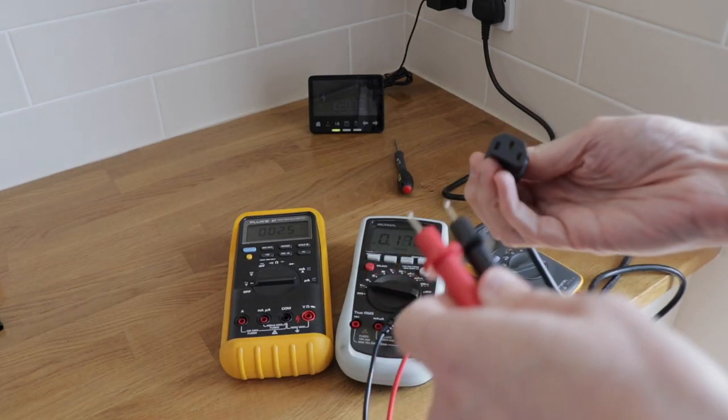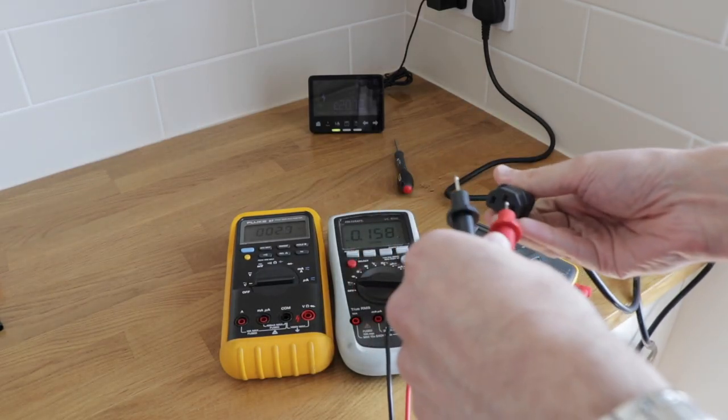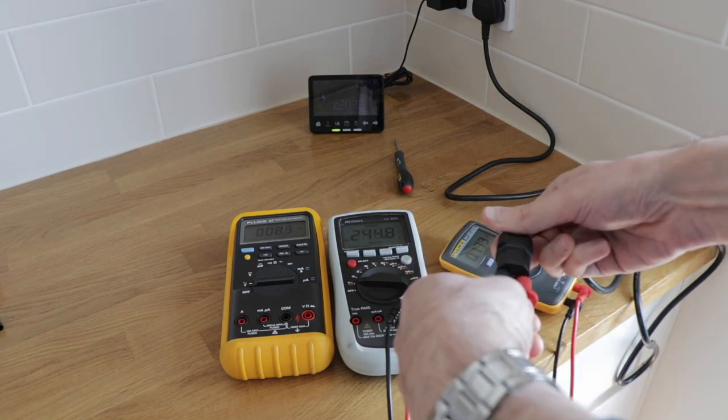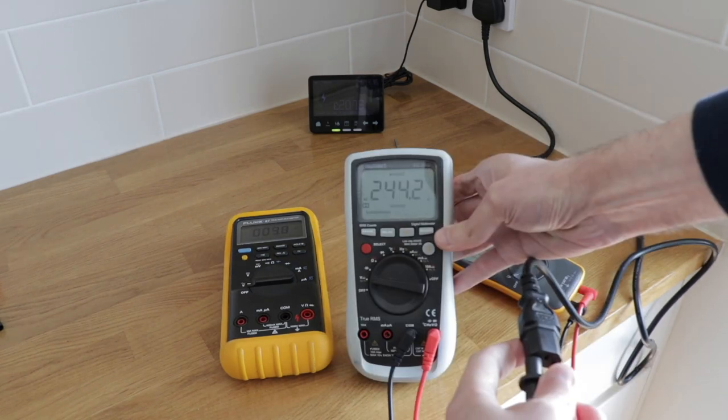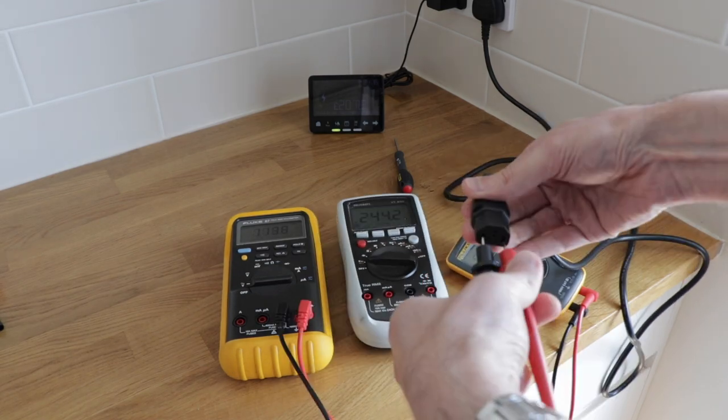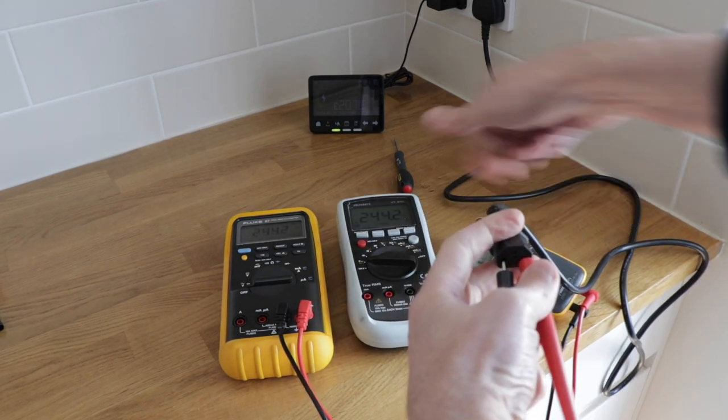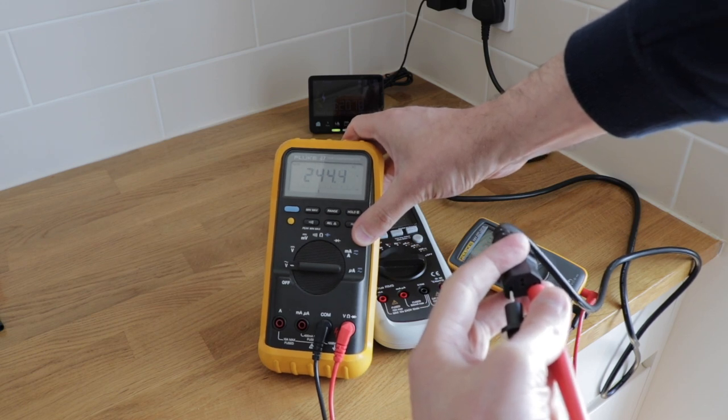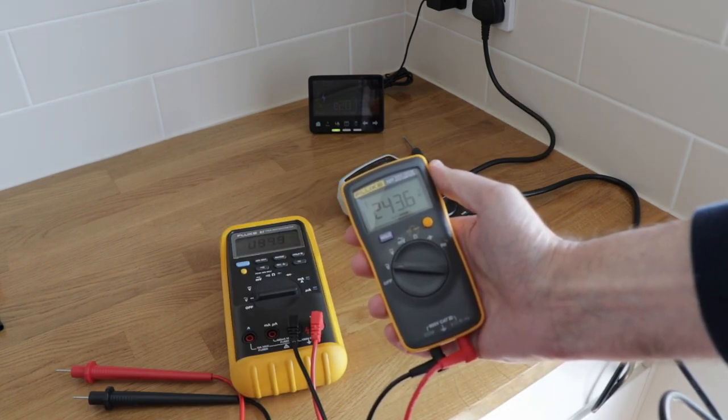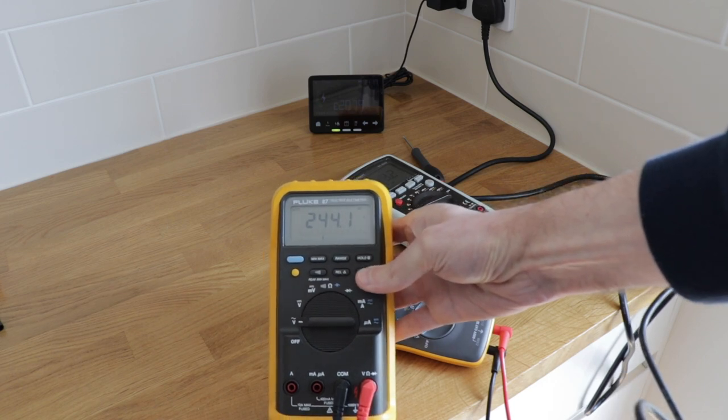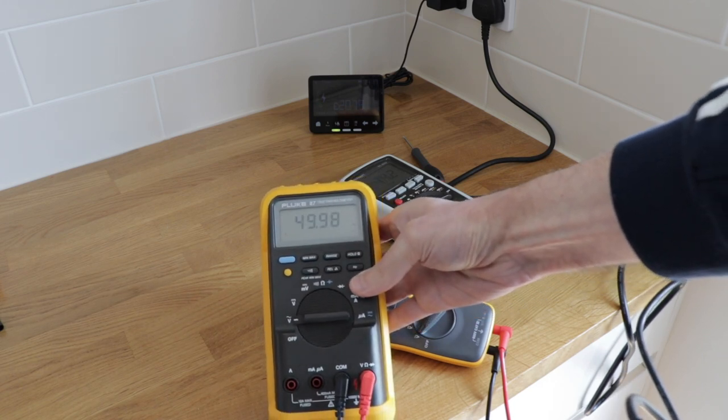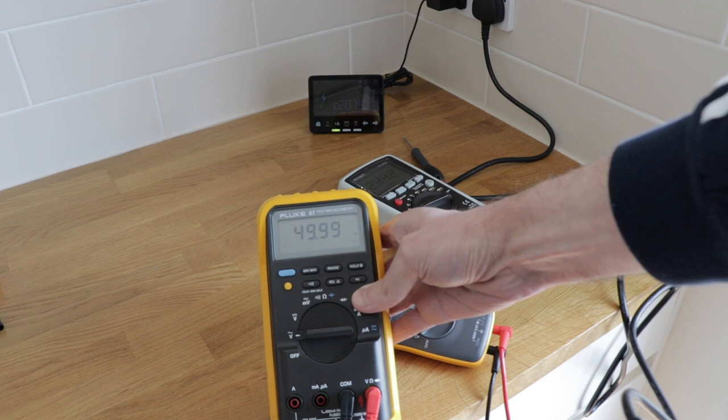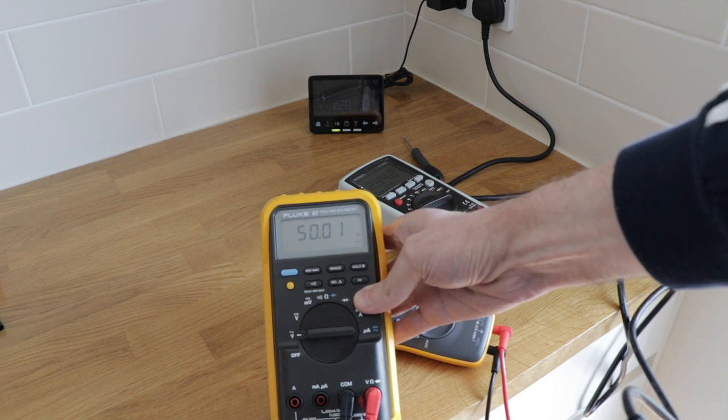Let's try the AC voltage. We'll do it on the voltcraft first. 244.2. 244.3. On the mini fluke, 243.6. We can also check the frequency. Yep, it should be 50, so that's pretty much perfect.